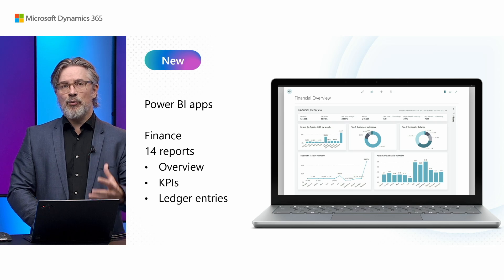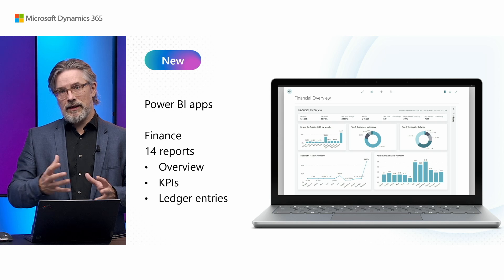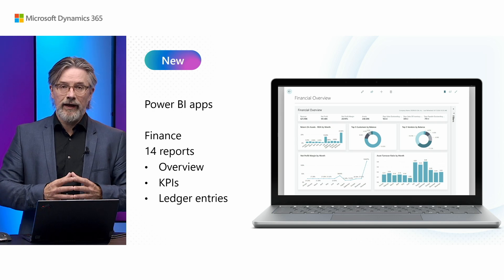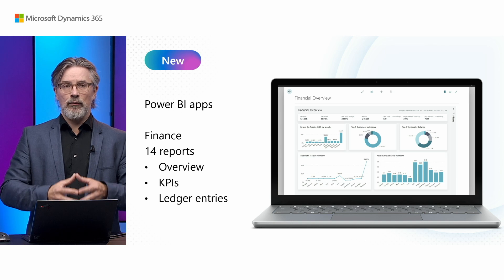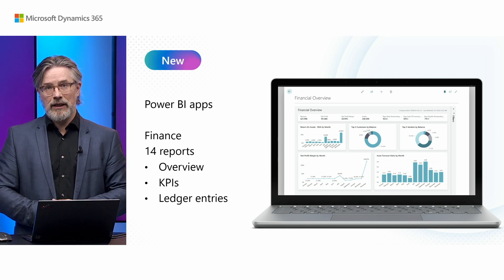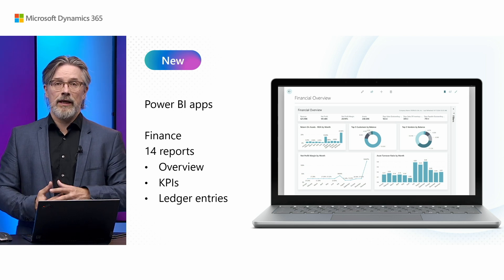We are going to deliver Power BI apps for six areas, including finance, sales and purchase and so on. The finance Power BI app includes 14 reports and they will be found as embedded reports in the product so you can call up financial information. They will contain overview, they will contain KPIs and they'll contain the ledger entries so you can drill down into the granular records for these reports. But it's all covered in a separate session.